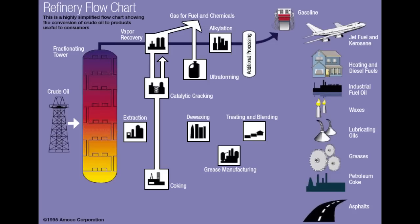You can see the ultraforming unit. The process of catalytic reforming is involved to make a high-octane gasoline. Note that additional processing is also needed to remove sulfur from these products — LPG as well as gasoline.